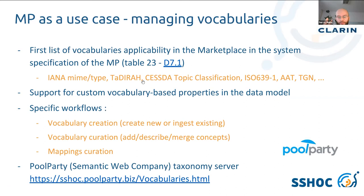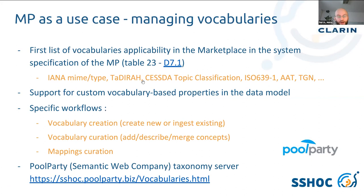So we established in the data model a custom mechanism where we can create custom, vocabulary-based properties as we go — as we integrate new sources. The marketplace is fed mainly from existing sources, and we encounter different descriptions there. We do a manual mapping process at the field level to see which fields in the source are semantically equivalent to properties we already have, and try to map those. If not, we create new properties and try to find the vocabulary best suited to describe it.